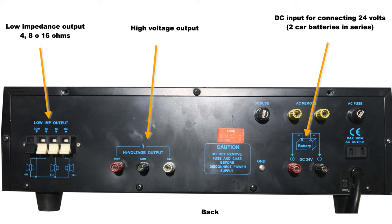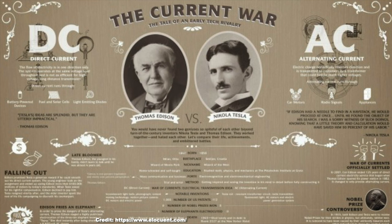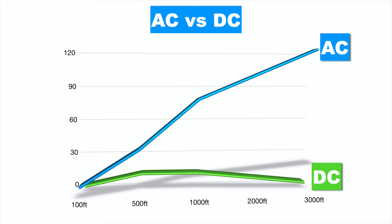Let's go back a bit into history. There was a current war long ago between Thomas Edison and Nikola Tesla. Edison wanted to transmit electrical power to the home grid using direct current, while Tesla wanted to do it using alternating current. As you may know, alternating current won.